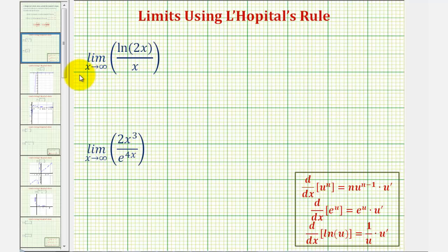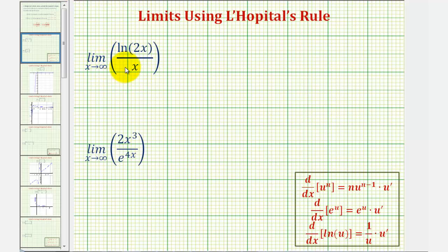We want to find the limit as x approaches infinity of natural log two x divided by x. Notice in this case, as x approaches positive infinity, both the numerator and denominator approach positive infinity. So we say this limit has an indeterminate form of infinity divided by infinity.